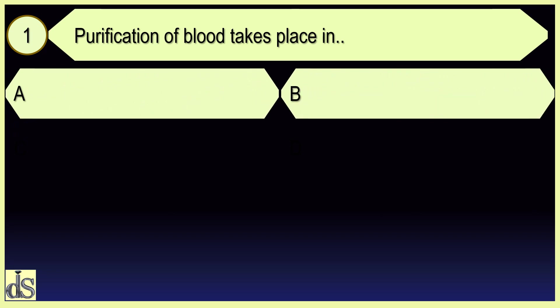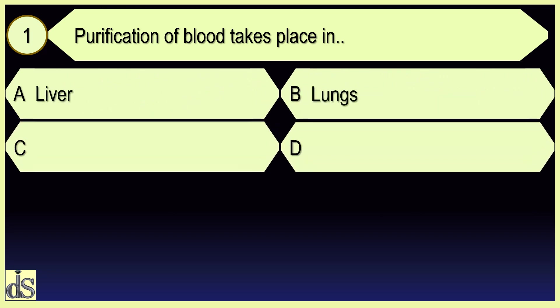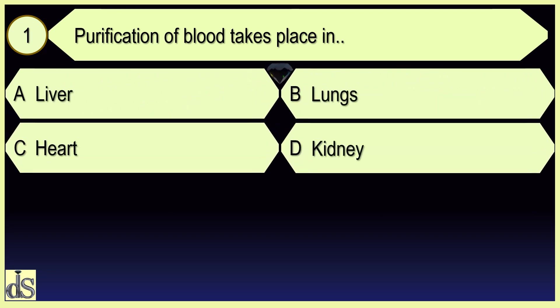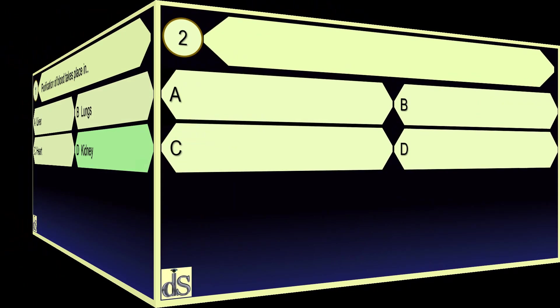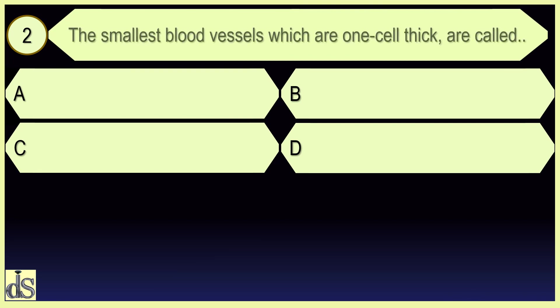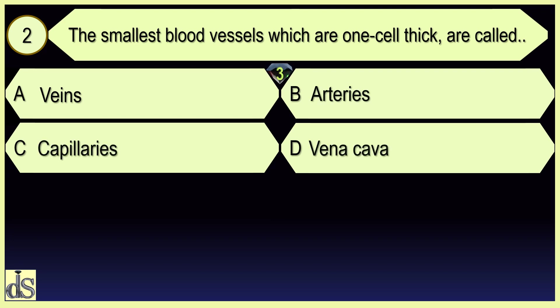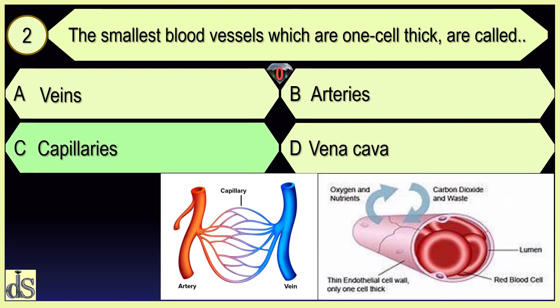Purification of blood takes place in kidney. The smallest blood vessels which are one cell thick are called capillaries.